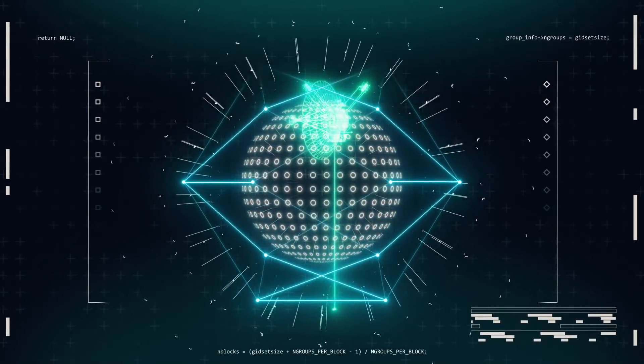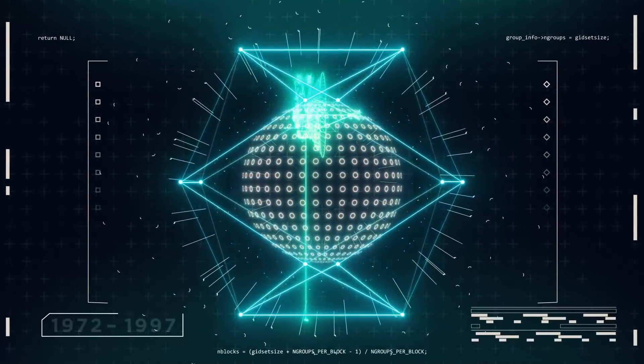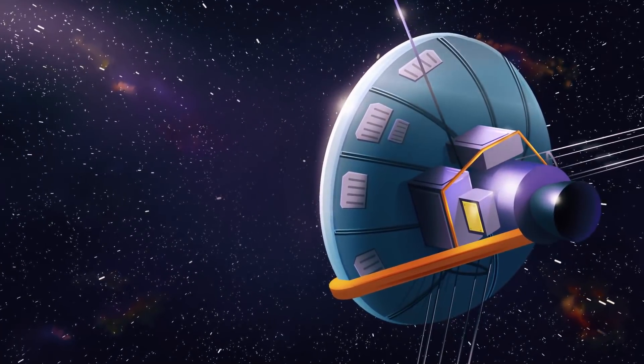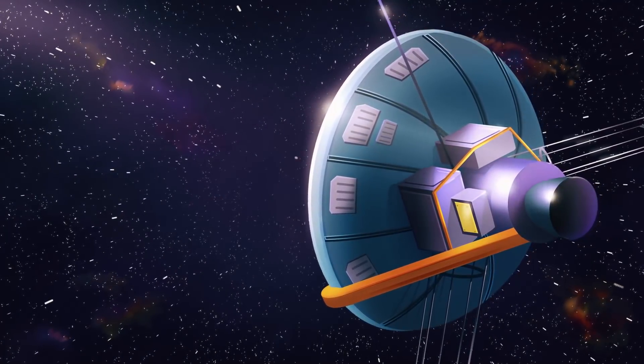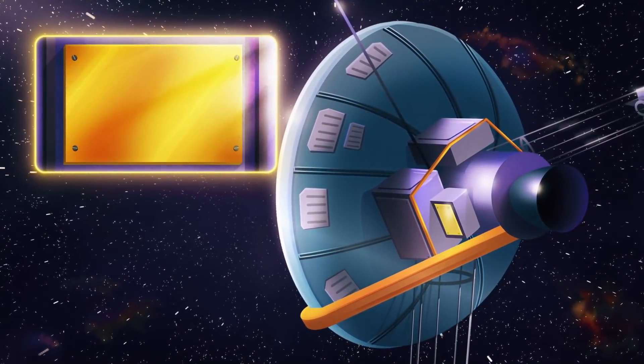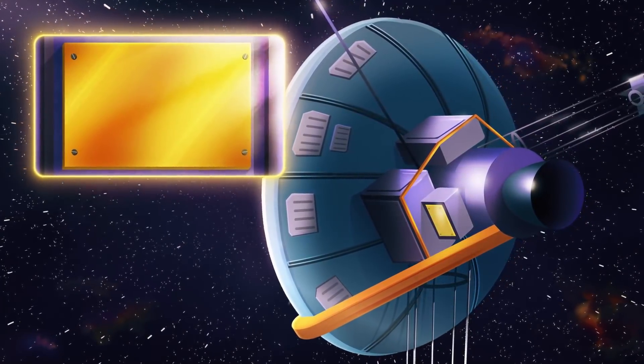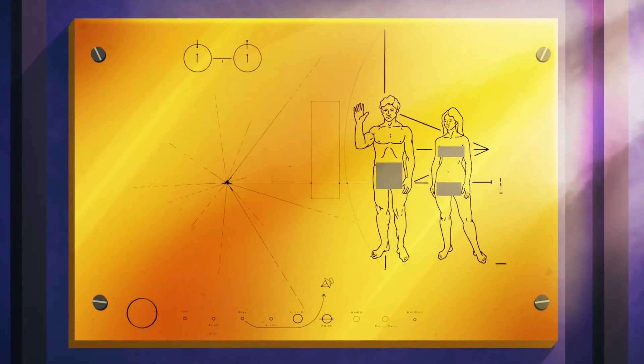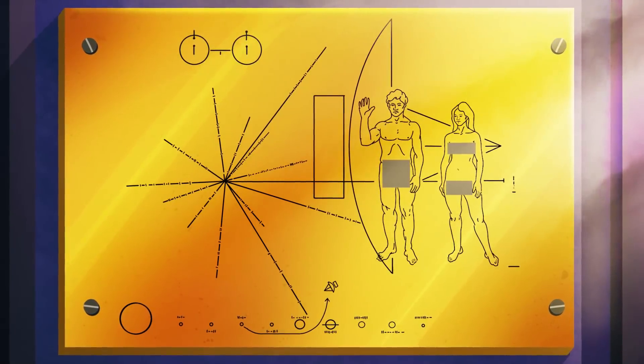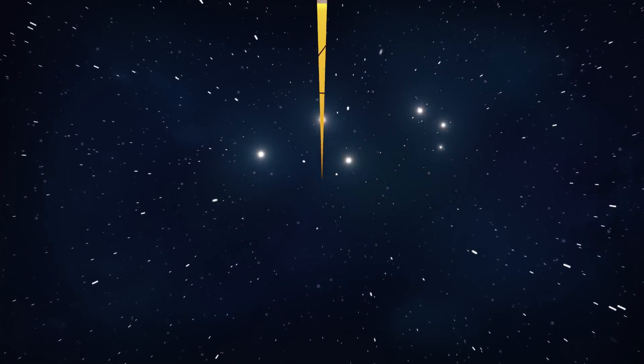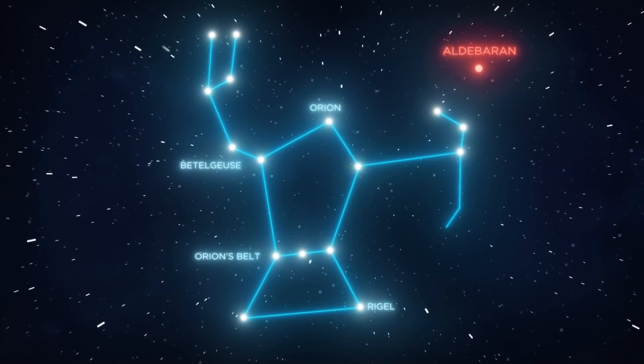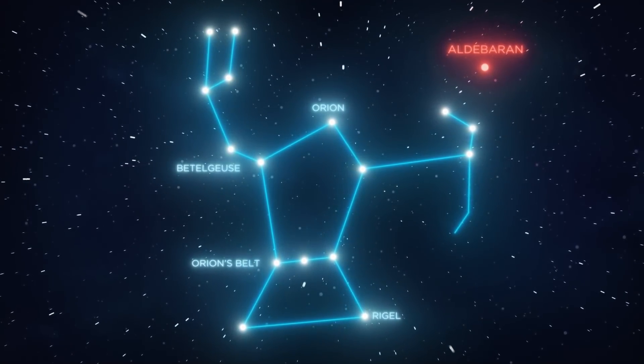While Pioneer 10's science mission officially ended in 1997, it remains in the outskirts of our solar system, billions of miles from Earth, acting as an emissary for our species. The Pioneer 10 carries a gold-anodized aluminum plaque, describing humanity and the location of Earth for any lifeforms that may discover our probe traveling through space. If left undisturbed, Pioneer 10 is aiming for the red star Aldebaran, a journey lasting approximately 2 million years.